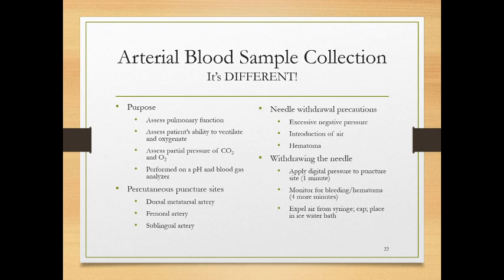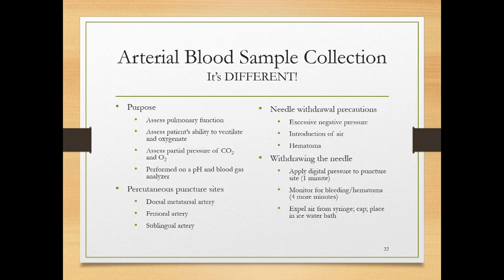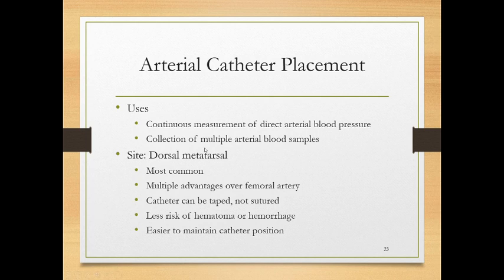Arterial blood is under more pressure than venous blood, so hematoma formation is much more likely. Apply digital pressure for a full minute to the puncture site — not 15 or 30 seconds — and monitor for bleeding or hematoma for four additional minutes, for a total of five minutes. As soon as the needle is out, have someone apply pressure while you handle the sample. Expel air from the syringe immediately, cap it, and place it in an ice water bath. Arterial catheters can be placed if direct arterial blood pressure measurement or frequent arterial sampling is needed.